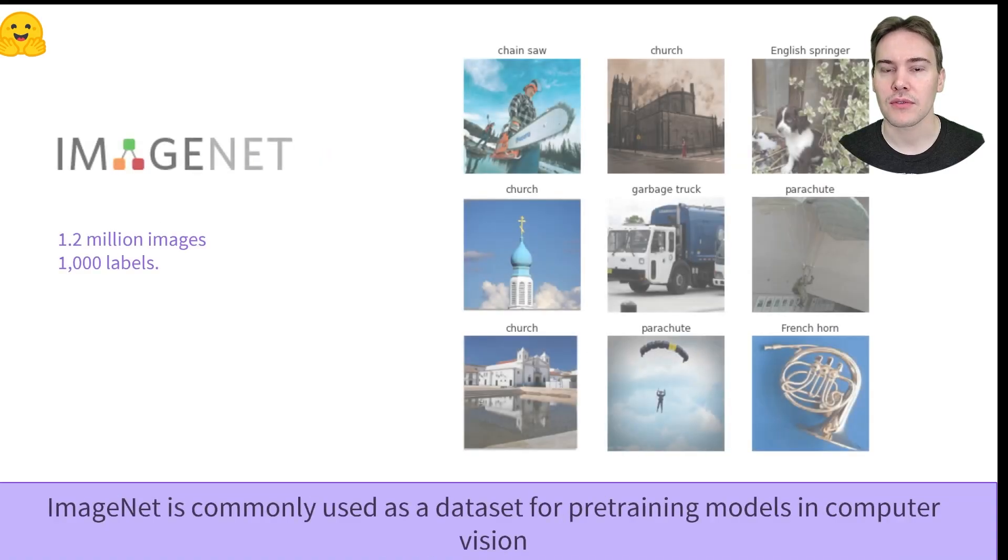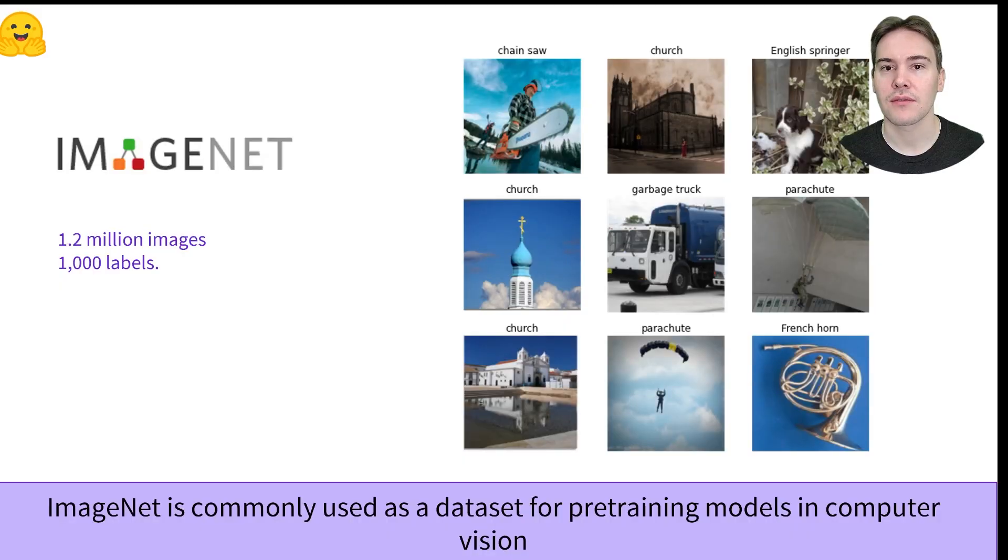In computer vision, transfer learning has been applied successfully for almost 10 years. Models are frequently pre-trained on ImageNet, a dataset containing 1.2 million photo images. Each image is classified by one of 1,000 labels. Training like this with labeled data is called supervised learning.